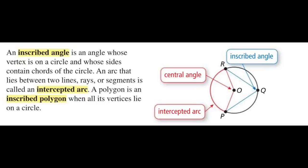We start by defining what an inscribed angle is. An inscribed angle is an angle whose vertex is on a circle and whose sides contain chords of the circle. An arc that lies between two lines, rays, or segments is called an intercepted arc.